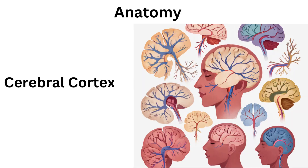The outermost layer of the forebrain is called the cerebral cortex, often referred to as the gray matter. It is responsible for many higher cognitive functions, including language, memory, decision-making, and conscious awareness. The cortex is highly convoluted and divided into two hemispheres, the left and right cerebral hemispheres.